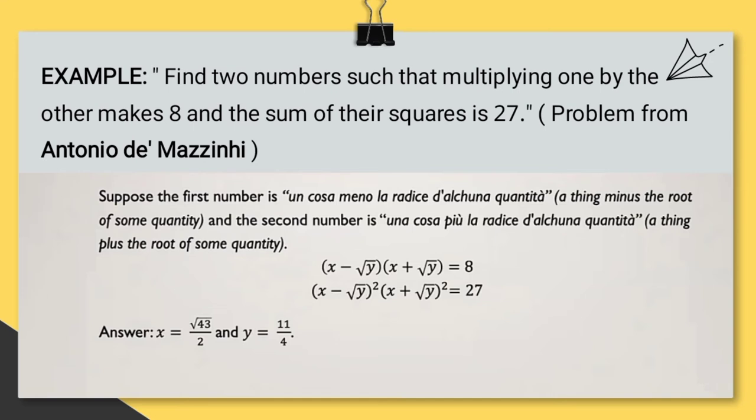Find two numbers such that multiplying one by the other makes 8, and the sum of their squares is 27. This problem came from Antonio Di Mazenji. Suppose the first number is una cosa meno la radice de alchuna quantita, which means a thing minus the root of some quantity, and the second number is una cosa pio la radice de alchuna quantita, which means a thing plus the root of some quantity. They just solved that system of equation algebraically, and they would get x equals square root of 43 over 2, and y equals 11 over 4.